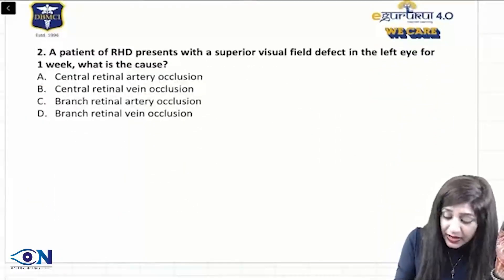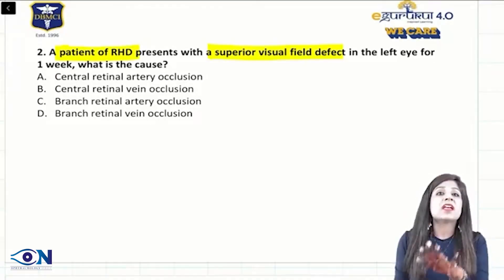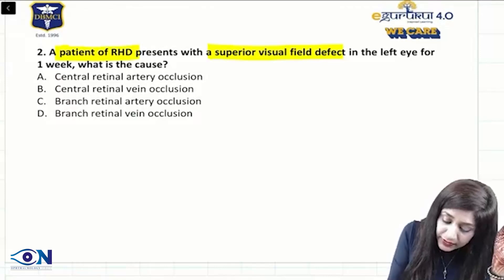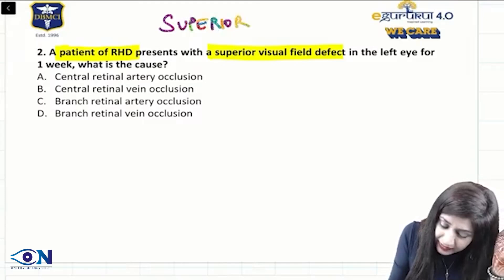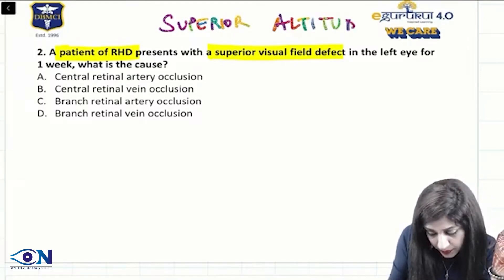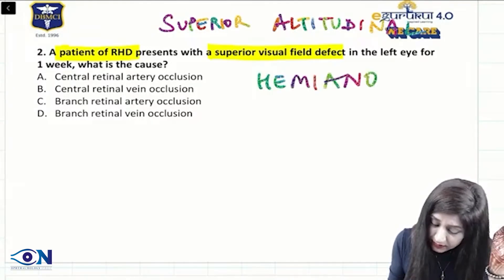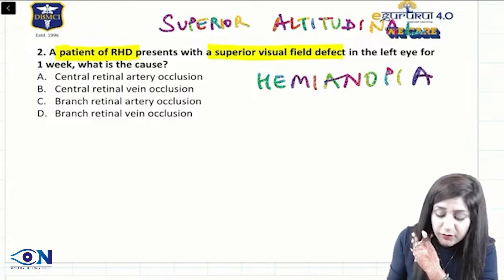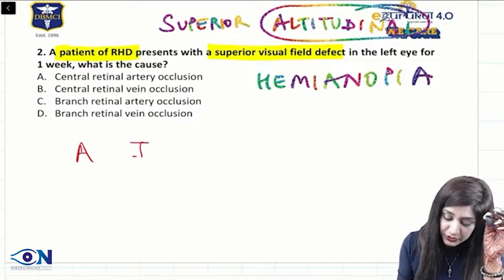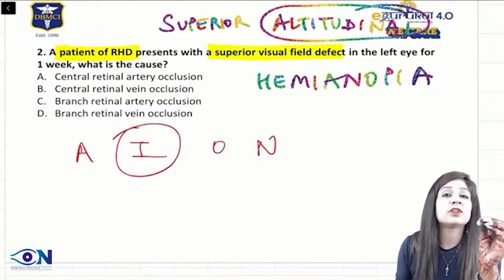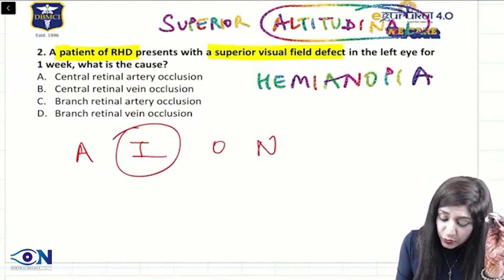We have a patient with RHD presenting with a superior visual field defect. This is called superior altitudinal hemianopia. Whenever you get this altitudinal hemianopia, it is always found in anterior ischemic optic neuropathy — that is, vascular or ischemic lesions. Because it is altitudinal and only superior, it cannot be a central defect.